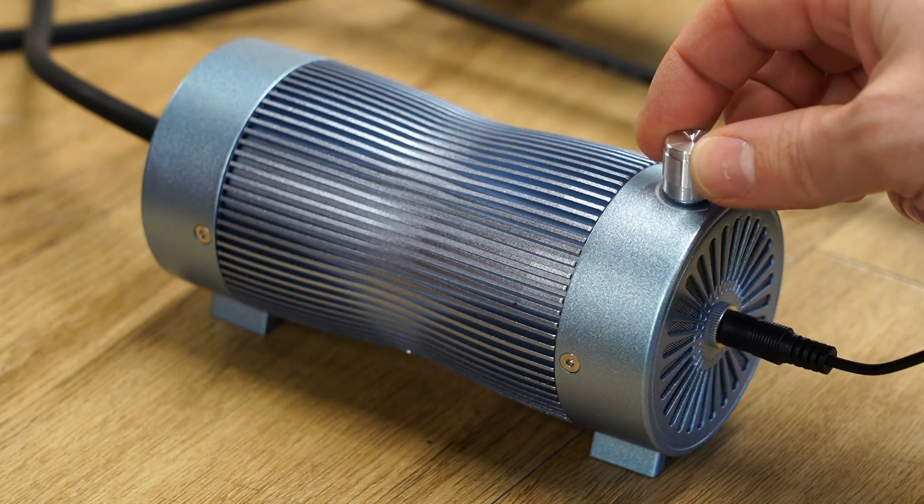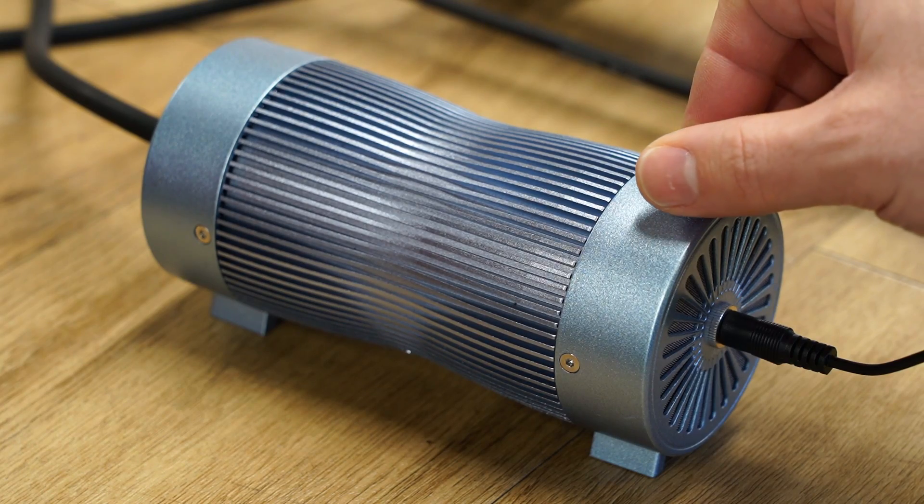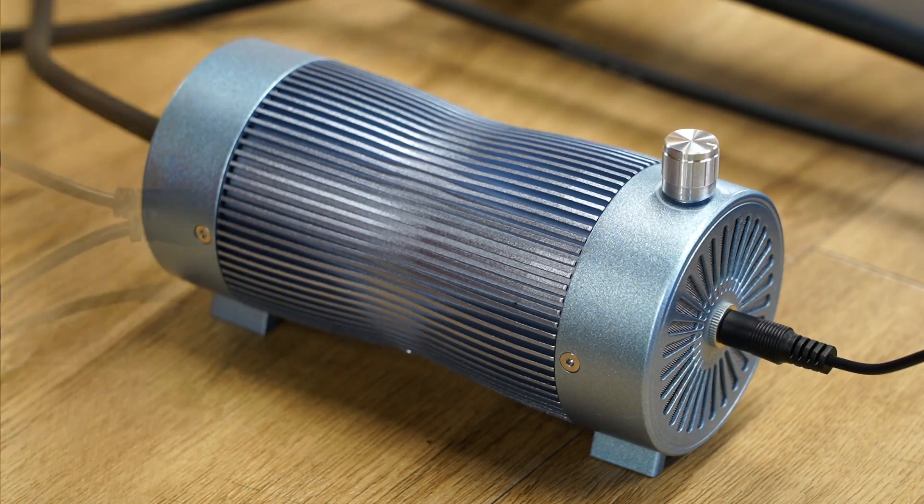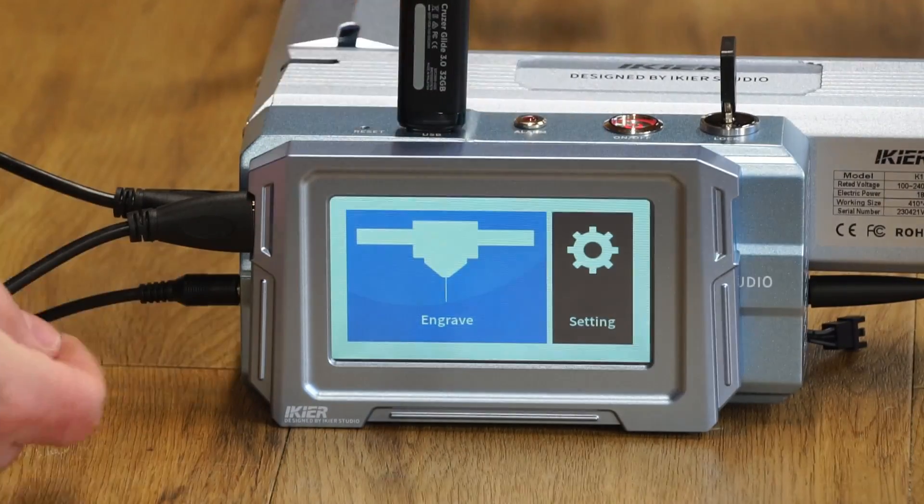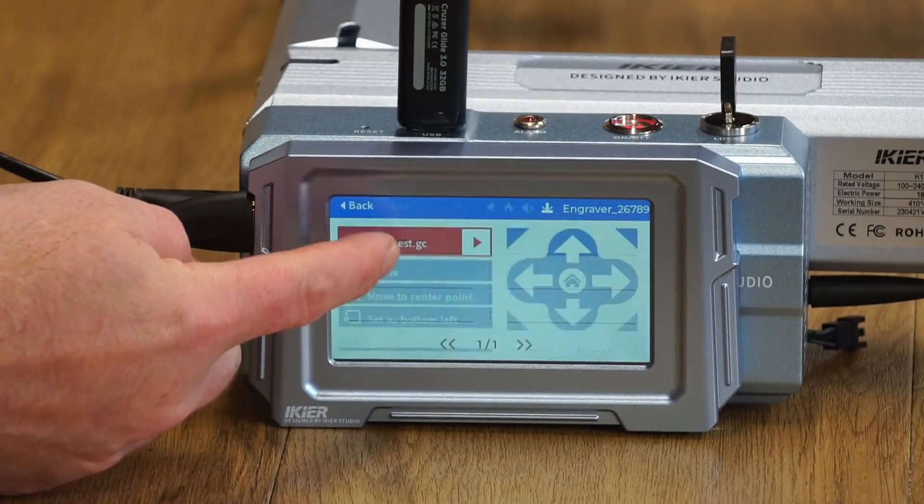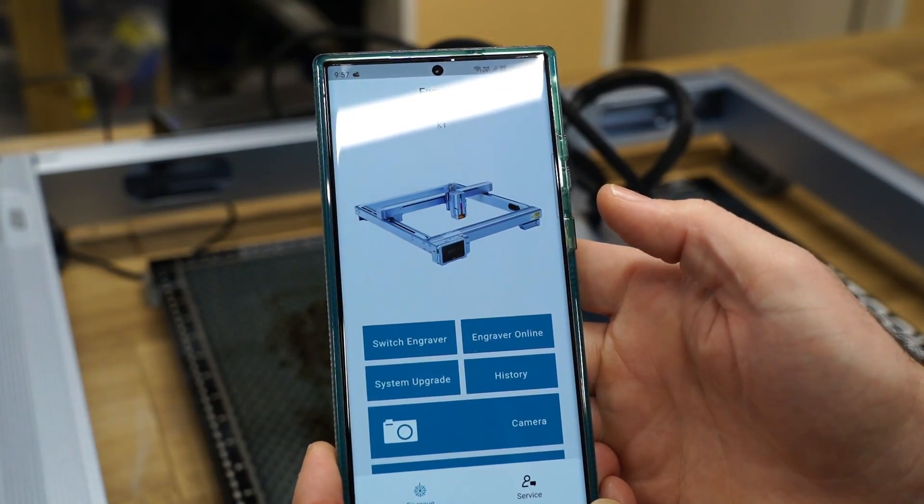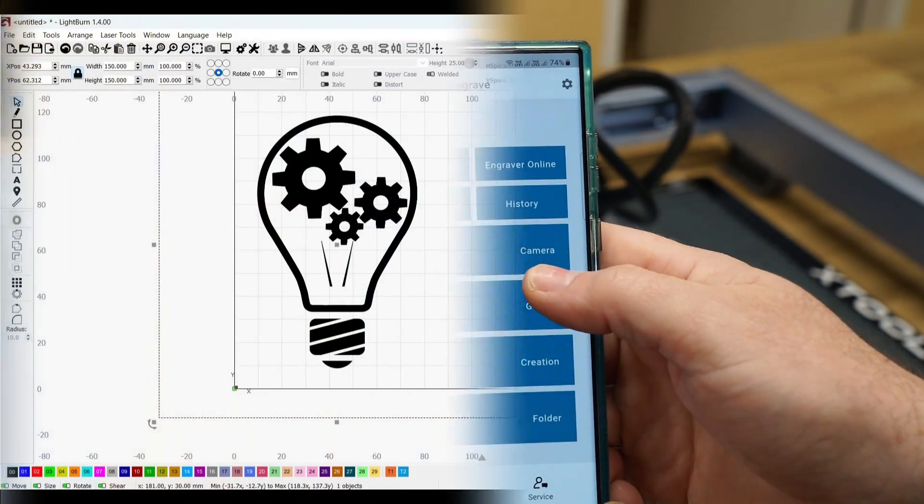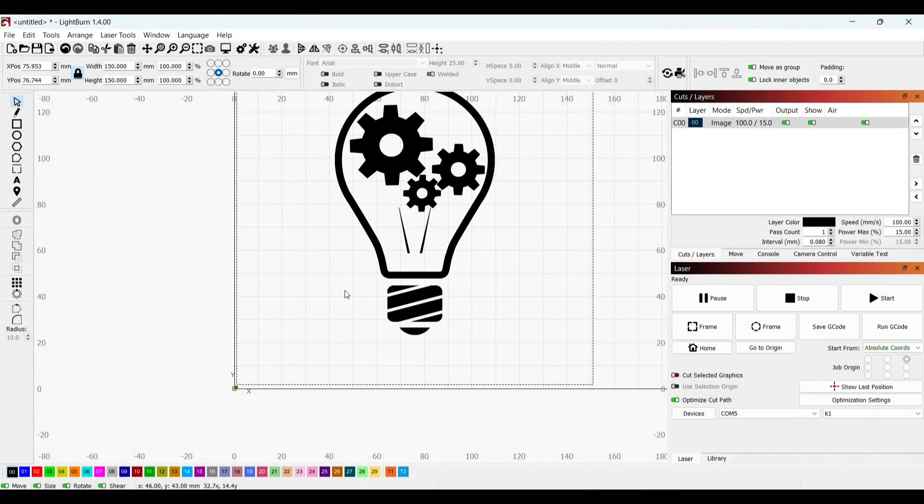It features an air compressor assist which means faster and cleaner cuts. You can run programs from a USB thumb drive using the touch screen interface. You can control the machine from your smartphone or with a PC running Lightburn software.